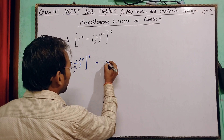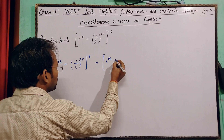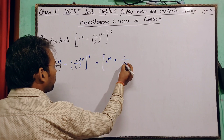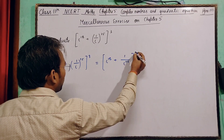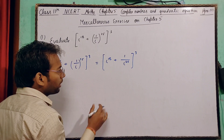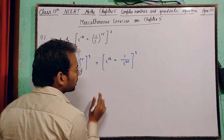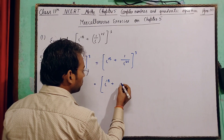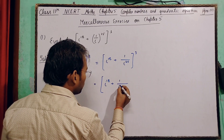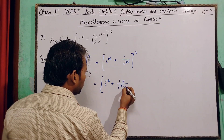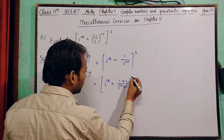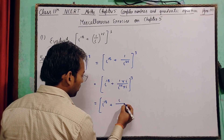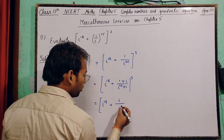Small bracket को solve करेंगे: i^18 + 1/i^25. 1 by i^25 को simplify करने के लिए हम i से ऊपर नीचे multiply करेंगे, जिससे यह i^18 + i by i^26 हो जाएगा।